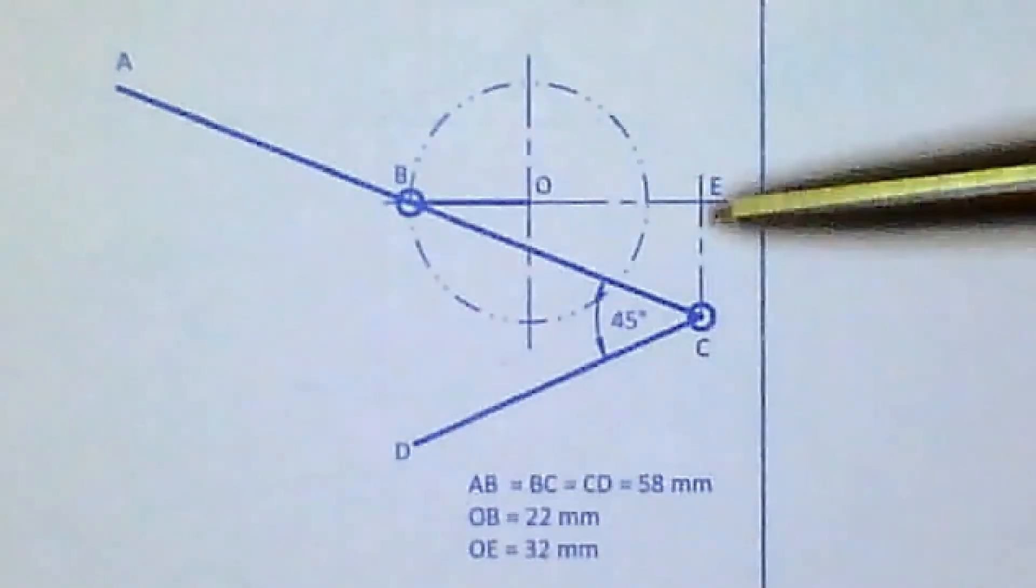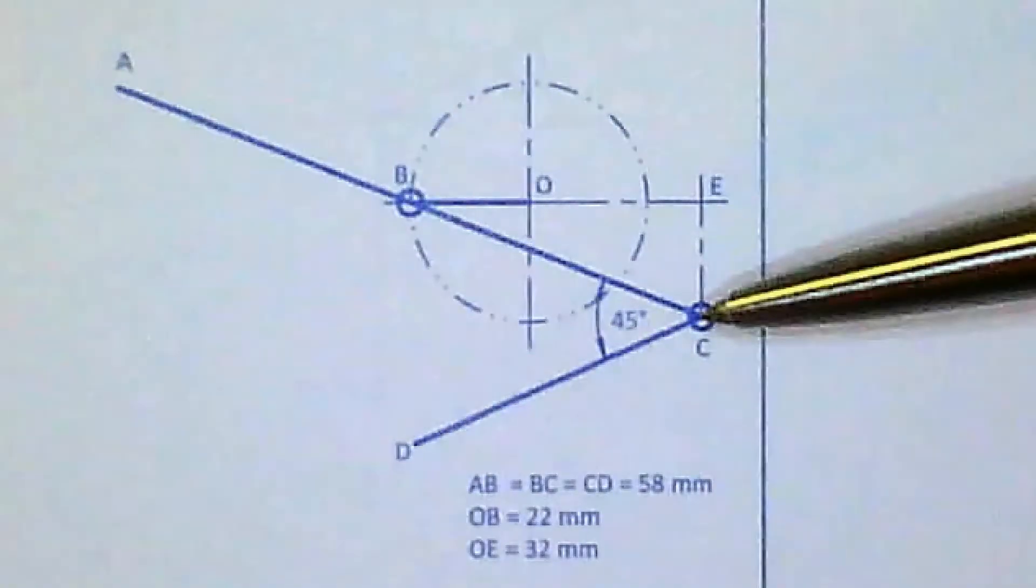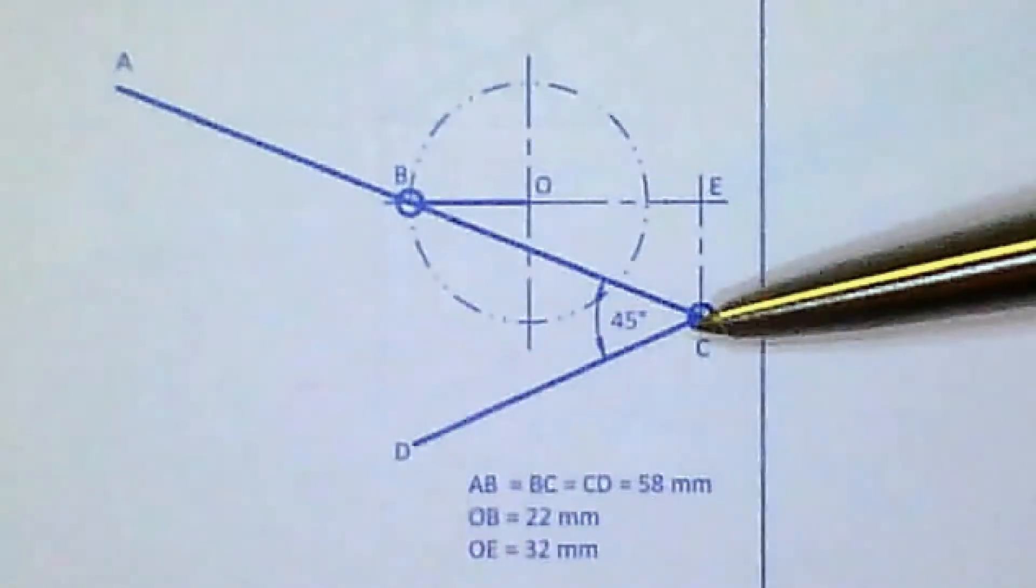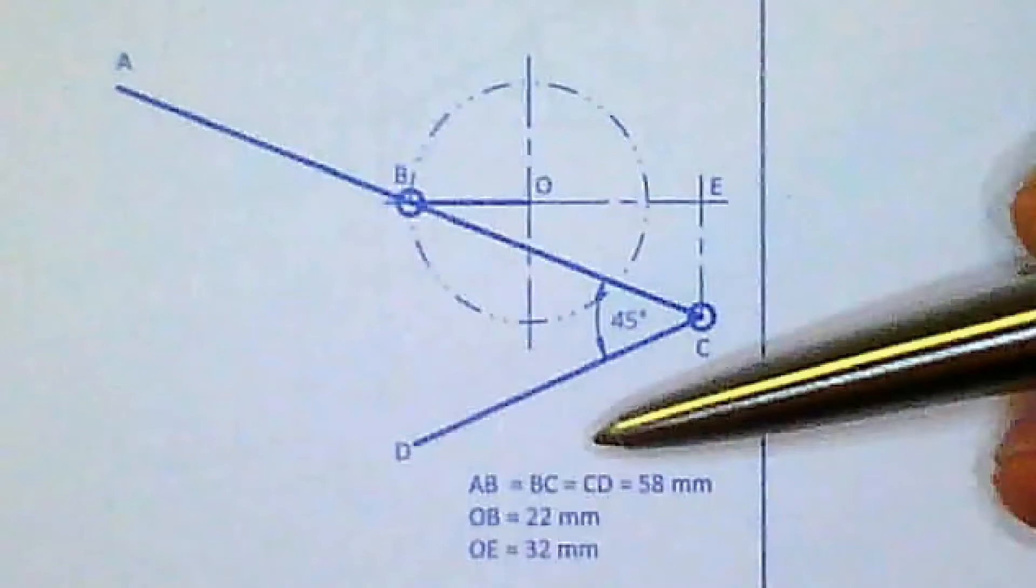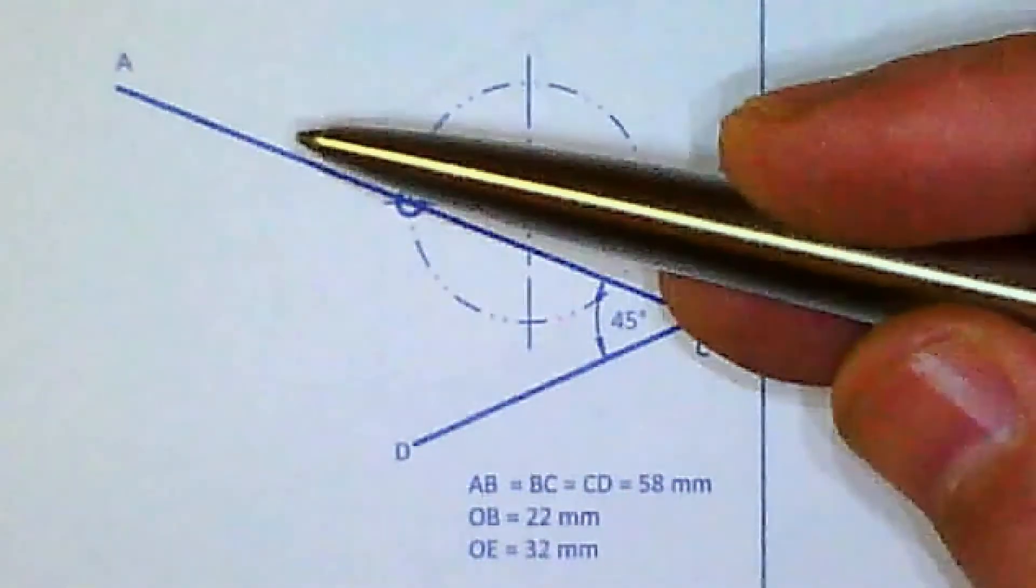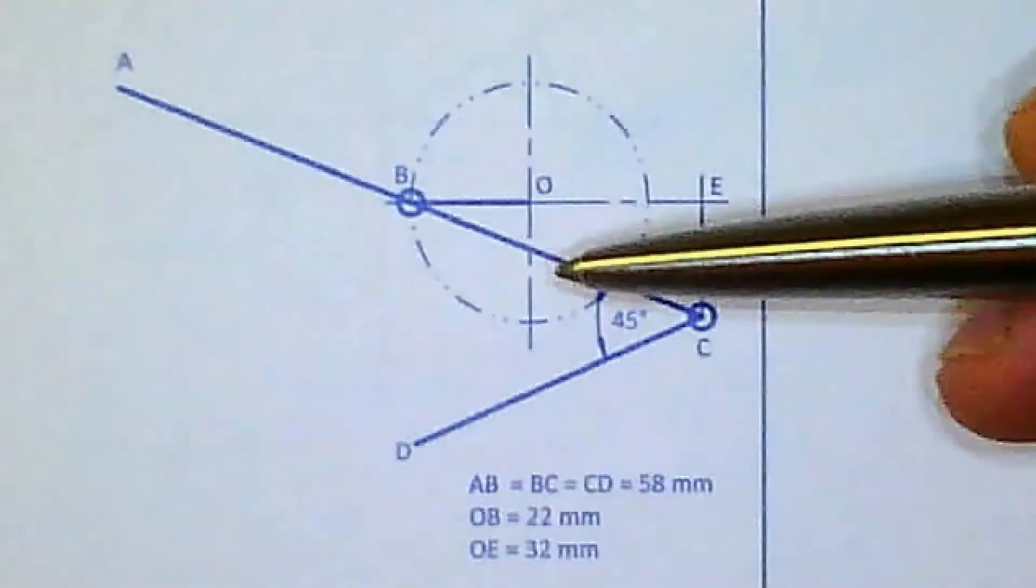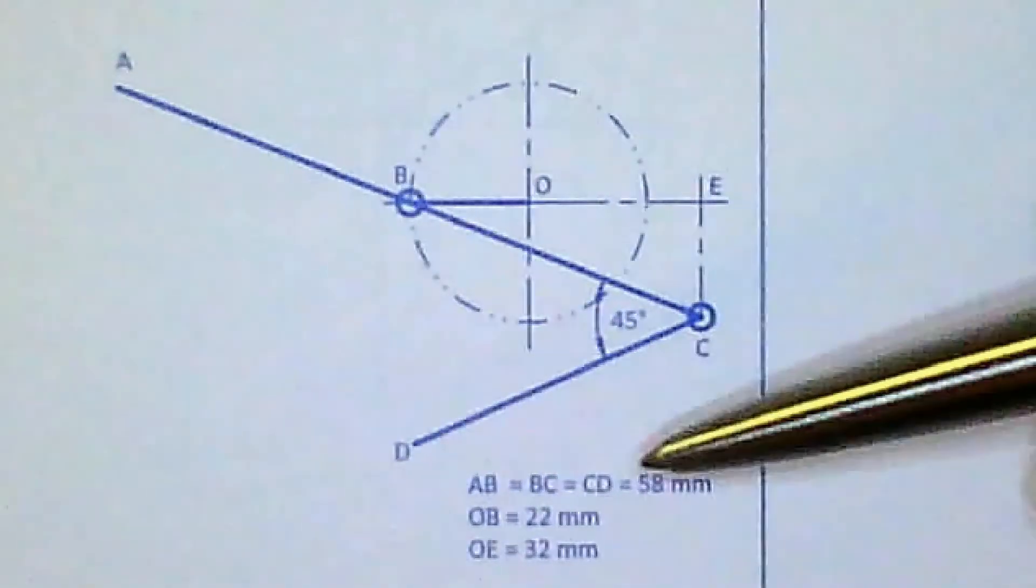Then you're going to draw a construction line straight down, in order to locate point C, and we know that AB to BC to CD, they are all 58. So this line segment from A to B, from B to C, and from C to D are all 58.